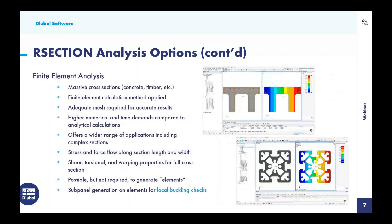The alternative analysis type is the finite element analysis. This should always be used for massive cross-sections — when talking about concrete or timber. The finite element calculation method will be applied. This does require, like any finite element analysis, that an adequate mesh be created. But R Section will do all of this automatically for each cross-section, so we don't need to manually mesh. This does require a higher numerical and time demand compared to the thin-walled analysis, but today you'll see that it's negligible when talking about just a simple cross-section calculation.